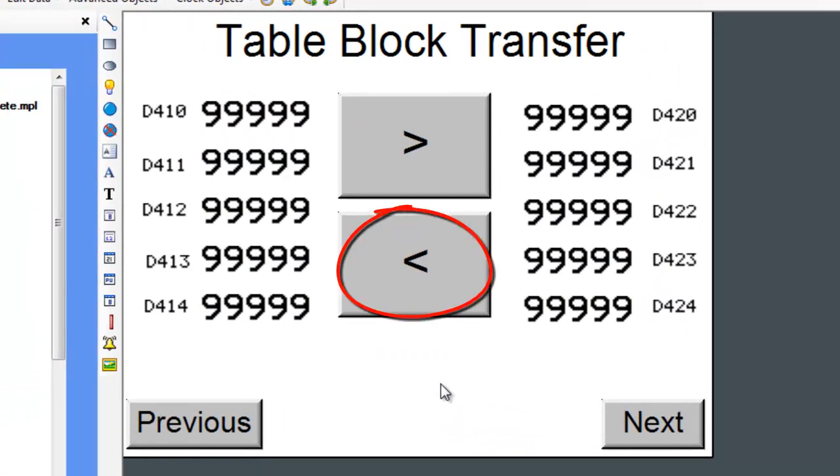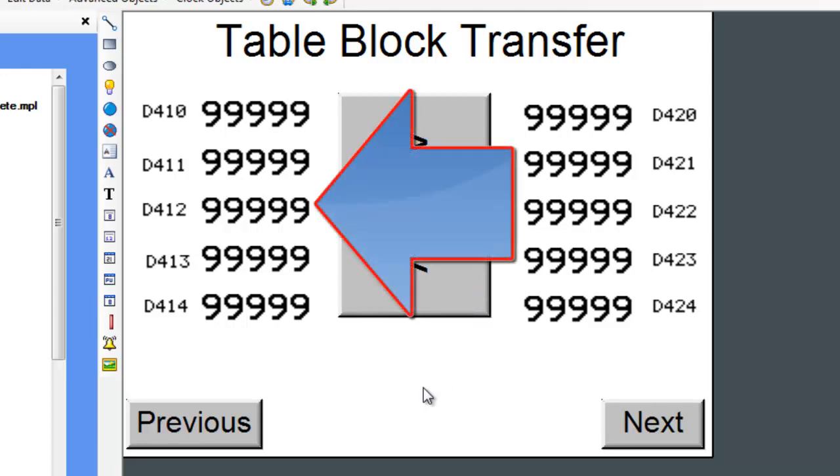Conversely, if we press the left arrow button, then the right to left coil turns on and the right table transfers to the left table.